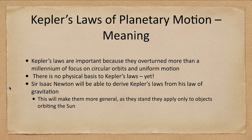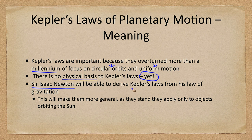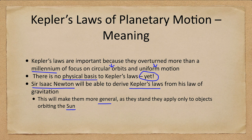Kepler's laws are very important because they overturned more than a millennium of belief in circular orbits and uniform motion. Copernicus had not gotten rid of these. However, there is no physical basis for why they occur — they are empirical laws found by examining Tycho's observations. The physical basis would come from Sir Isaac Newton, who derived Kepler's laws from his laws of gravitation, making them more general. Right now they apply only to objects orbiting our sun, but Newton would apply them to everything in the universe.